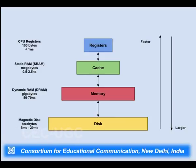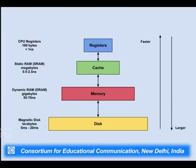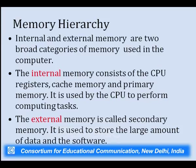Hard disks generally come in terabytes and have an access time of about 5 to 20 milliseconds. Dynamic RAM has a size in gigabytes with access time of 50 to 70 nanoseconds. Static RAM, used as cache memory, has access time of 0.5 to 2.5 nanoseconds. CPU registers have access time of less than 1 nanosecond and a size of about 100 bytes. The disk provides the largest storage space while registers provide the minimum.